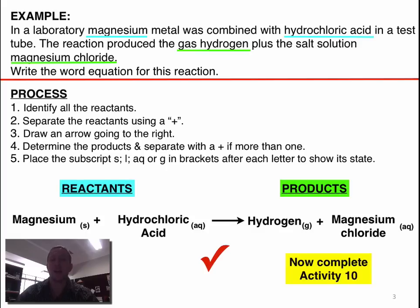Hydrogen is a gas, and magnesium, again, is a solution, because it says it in the example. So, now we have produced a correct word equation. It's that simple.